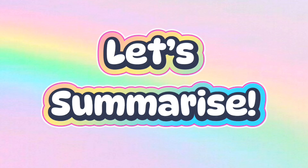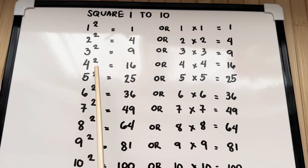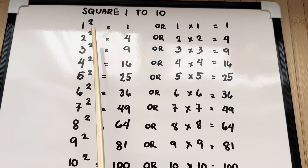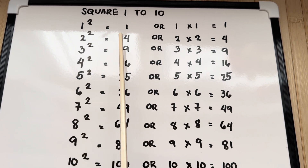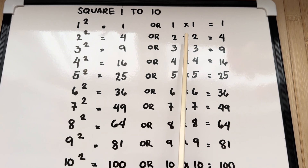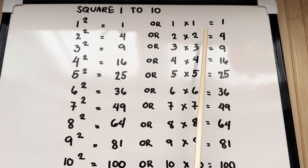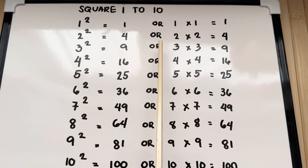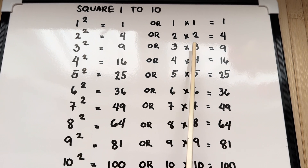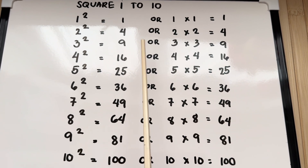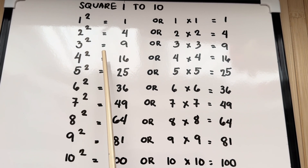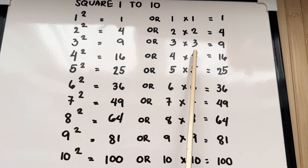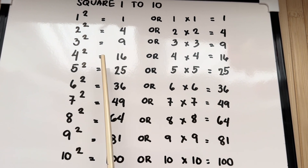Now, let's summarize. Square 1 to 10. 1 squared is equals to 1, or 1 times 1 is equals to 1. 2 squared is equals to 4, or 2 times 2 is equals to 4. 3 squared is equals to 9, or 3 times 3 is equals to 9.